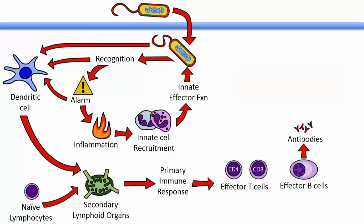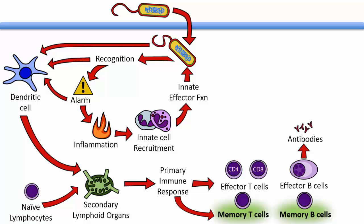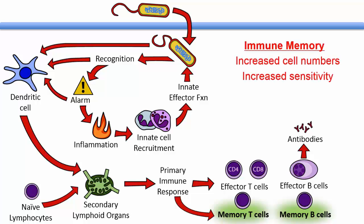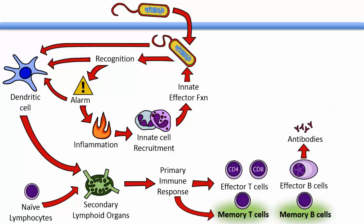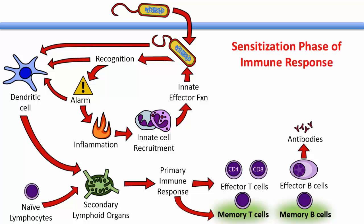At the same time you are generating effector cells, you are generating memory T cells and B cells, so that you can remember and more rapidly respond to pathogens to which you have been exposed. Characteristics of immune memory include increased cell numbers and increased sensitivity. These cells are pre-programmed to fight infections, and their activation is not dendritic cell dependent. All of the steps covered represent the sensitization phase of the immune response. Once you are exposed to an antigen, you are sensitized to it, and once sensitized, your immune memory will last for years.